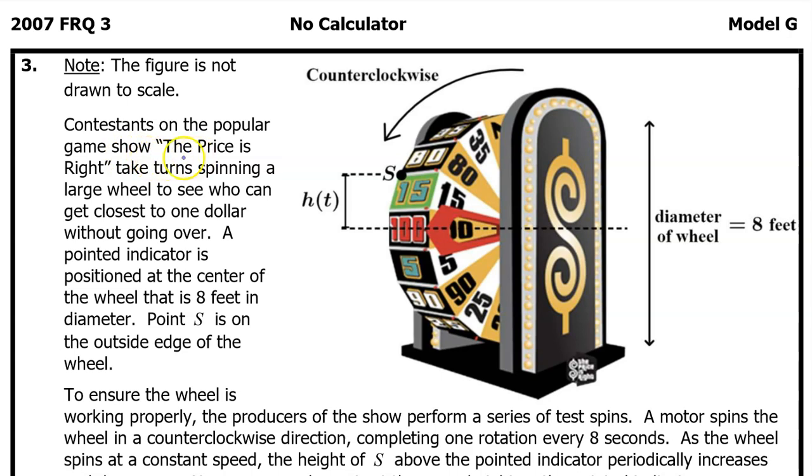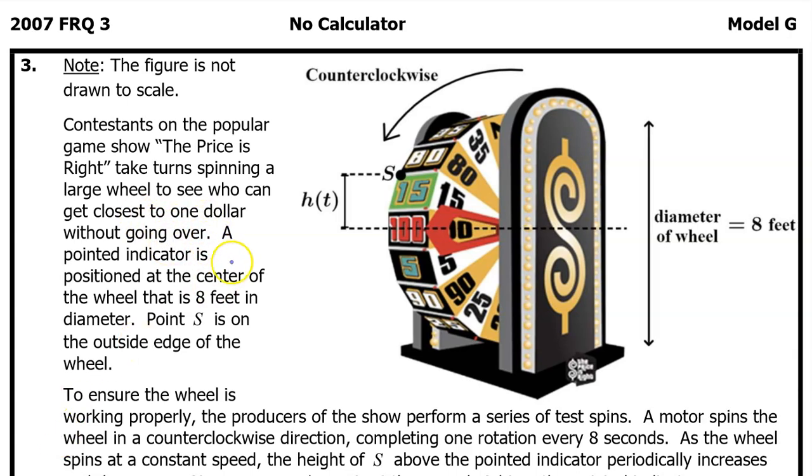Contestants on the popular game show, The Price is Right, take turns spinning a large wheel to see who can get closest to one dollar without going over. A pointed indicator is positioned at the center of the wheel that is eight feet in diameter. Point S is on the outside edge of the wheel.